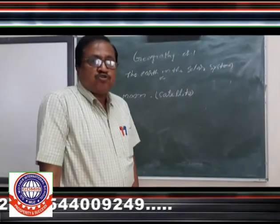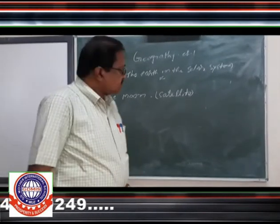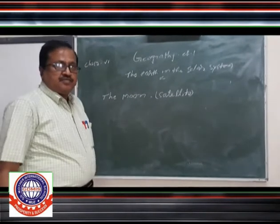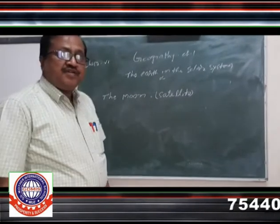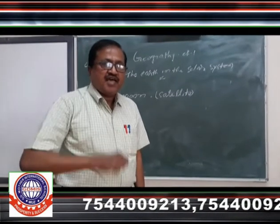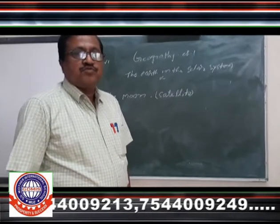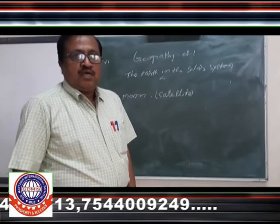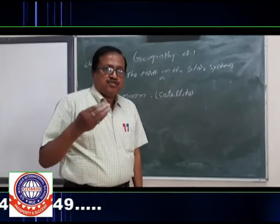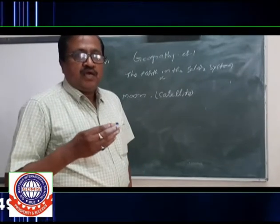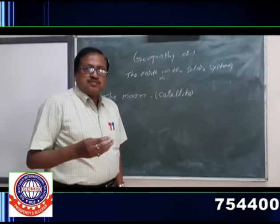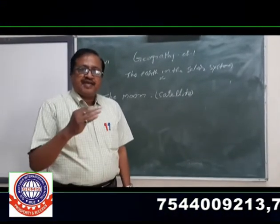Now, come to the Moon. The first two planets — Mercury and Venus — do not have any moon. Our Earth has one moon, and Mars has two moons. The outer planets beyond Mars have many moons.